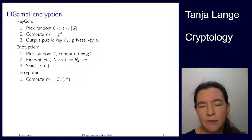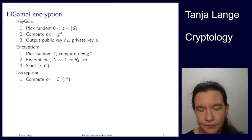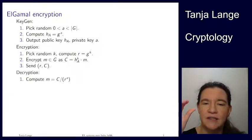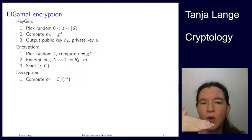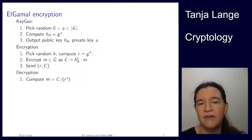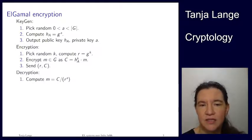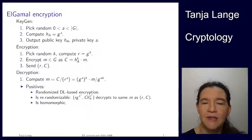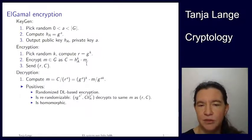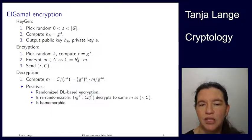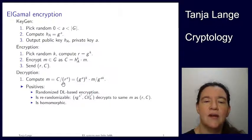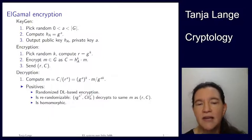Alice wants to decrypt: she takes the ciphertext C and divides by R — the first component — raised to her private exponent A. Let's prove this is actually the message. C was Alice's public key times the message: Alice's public key is G to the A raised to the Kth power, so there's a G to the AK. And R to the A is also G to the K to the A, so these two cancel and we indeed get M.